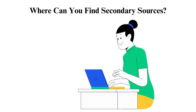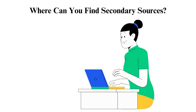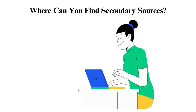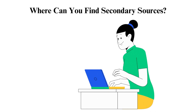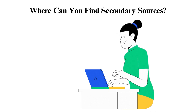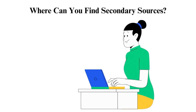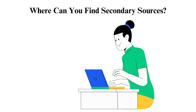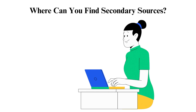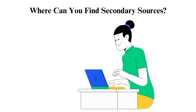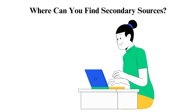JSTOR provides over 2,000 scholarly journals in many disciplines such as sciences, social sciences, humanities, and arts. Oxford Bibliographies is a site that offers content for various subjects like literature, public health, environmental science, social work, etc. Google Scholar is a search engine for scholarly literature like papers, theses, dissertations, books, case studies, and reports. Pew Research Center contains reports of trending global issues, including opinion polls, media analysis, and social research.